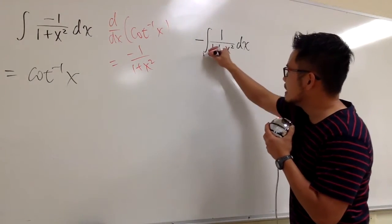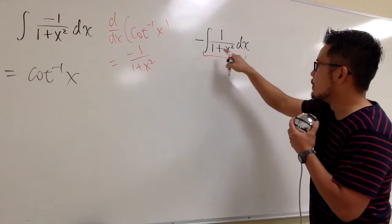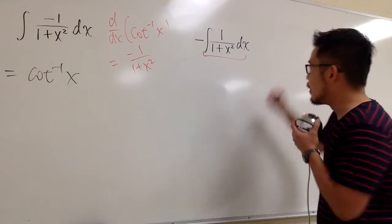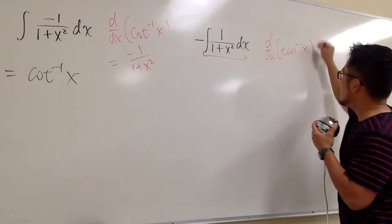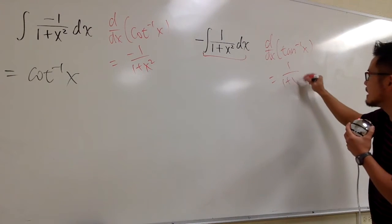Second one, let's focus on this part first. Integral 1 over 1 plus x squared. I also know if I take the derivative of inverse tangent, I will get 1 over 1 plus x squared, right?